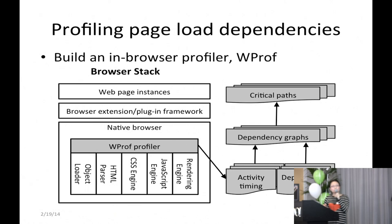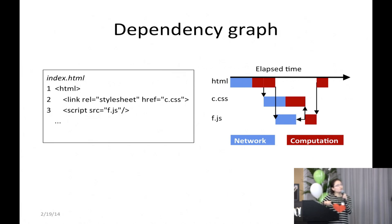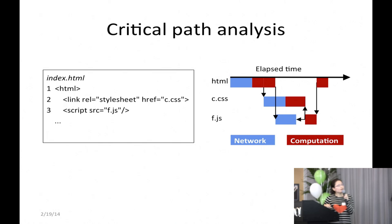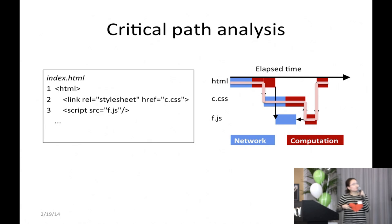Here is the dependency graph of the example we previously discussed. Even for a simple page, the dependency graph is non-trivial. For critical path analysis, we start from the last activity and trace backward to the first one. What this means is that if we improve an activity on the critical path, page load time is likely to be improved. For example, if we improve loading a JavaScript that is off the critical path, page load time will not be improved.